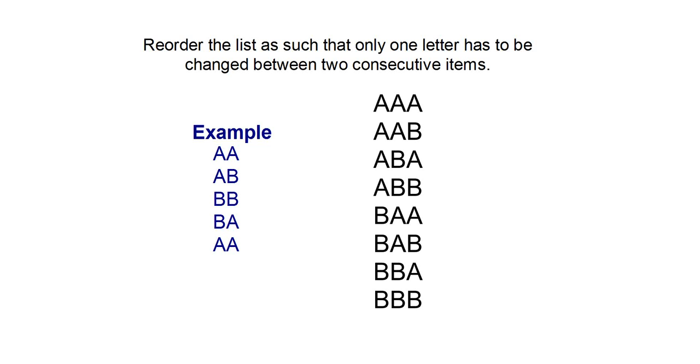So, we will start by this one, which looks very complicated, but it's easy in fact, but we can make it even easier. Basically, you have a list of items, and you have to reorder the list such that you can go from one item to the next with changing only one letter.